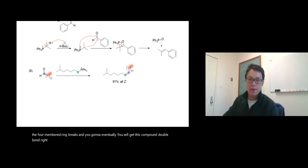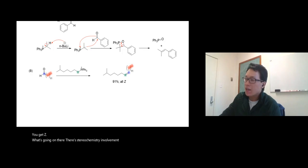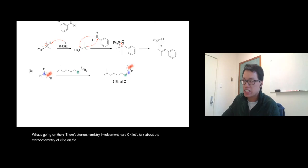You probably have drawn the E isomer, but actually this one you get Z. What's going on there? There's stereochemistry involved in here. Let's talk about the stereochemistry of ylide on the next video—there's a detail behind it.